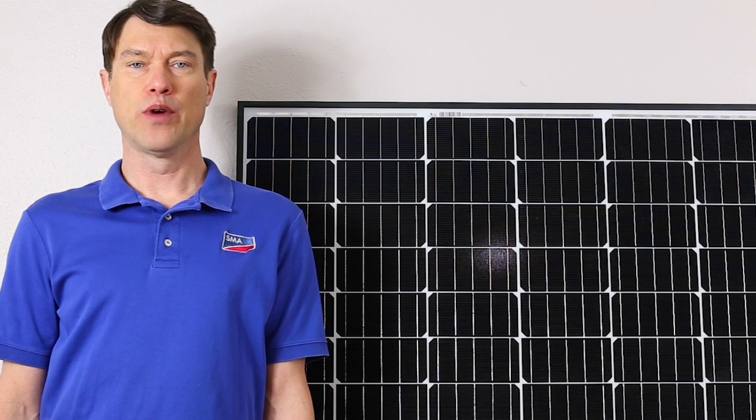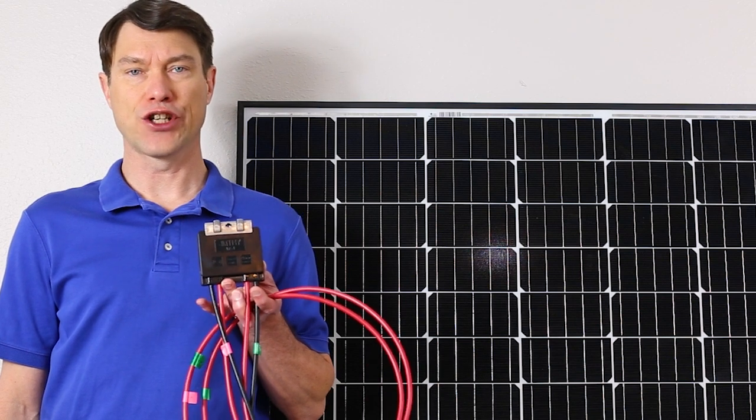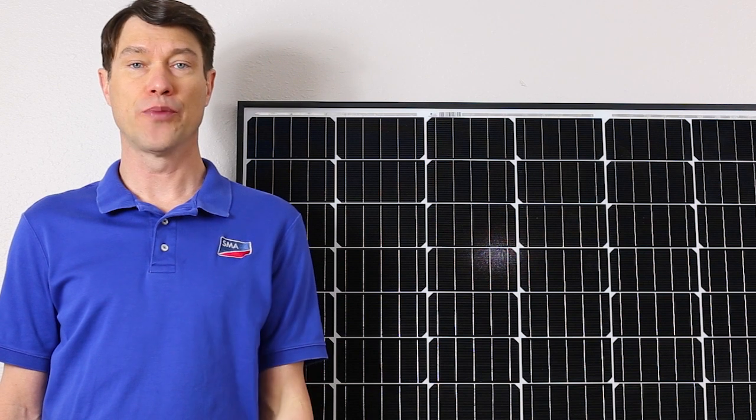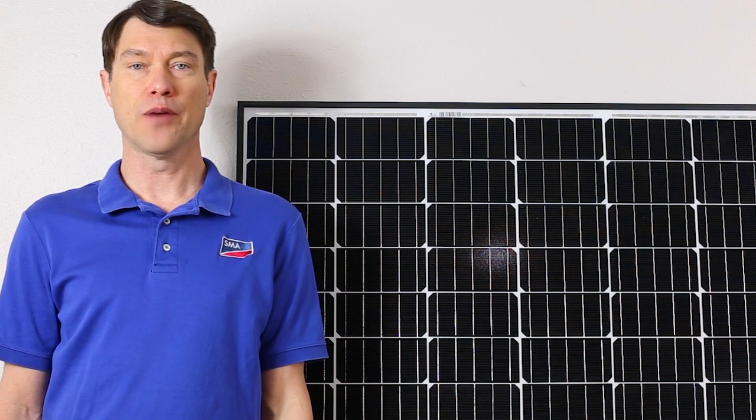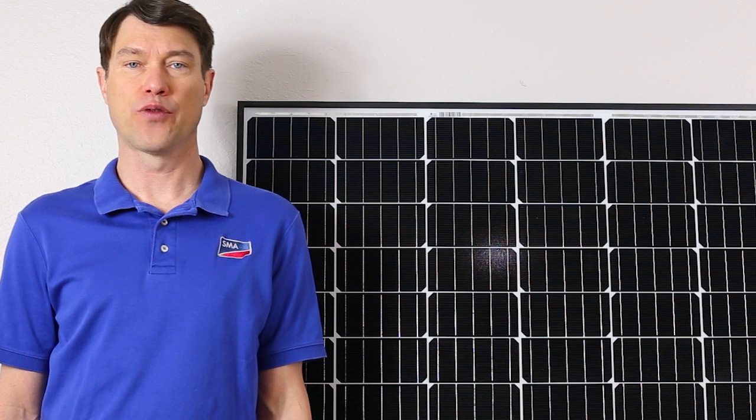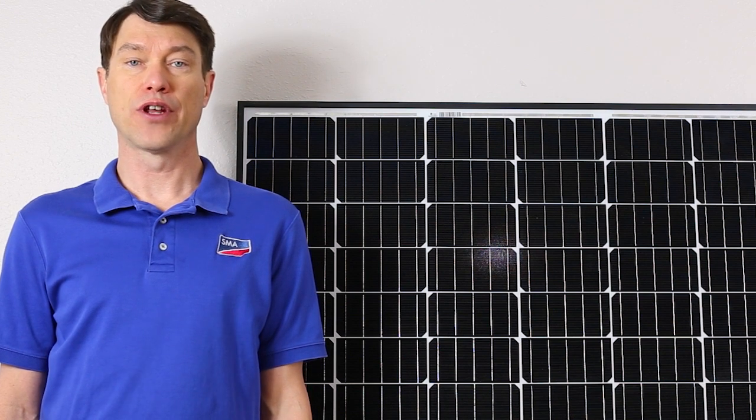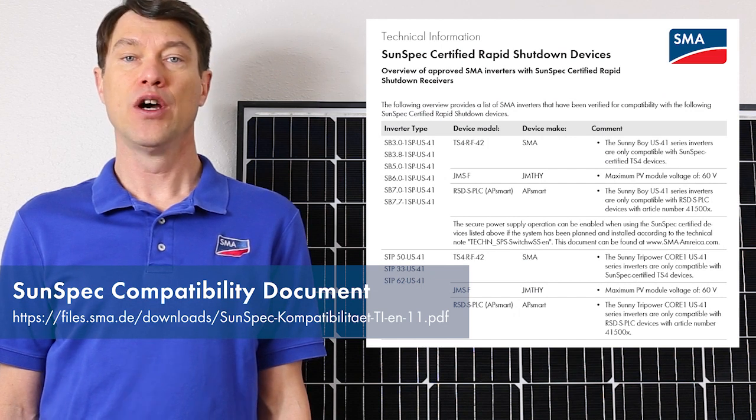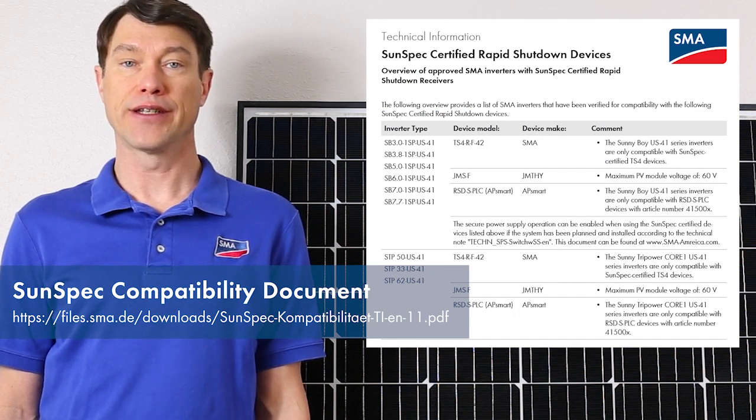In this video, we will cover the installation of the JMS-F device, a SunSpec Certified Shutdown Receiver element that has also been tested by SMA for full compatibility with the Sunnyboy US-41 and Core-1 US-41 inverter lines. Please note that only fully compatible devices are approved for installation with SMA inverters with integrated SunSpec Certified Shutdown transmitters.